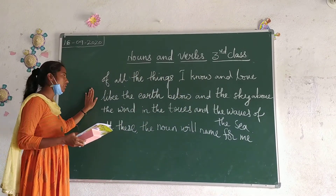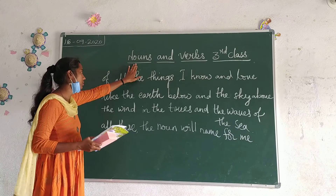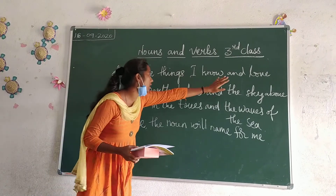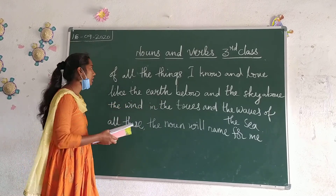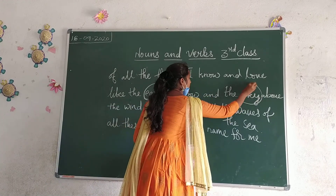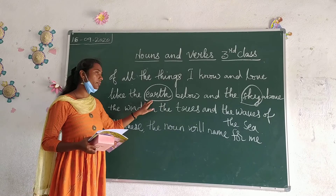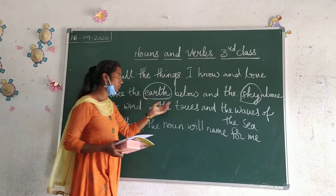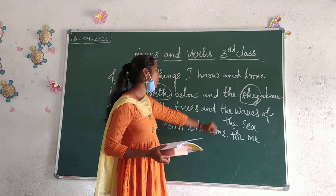We have written the verses. The first stanza — we will identify the nouns, then we will go to the verbs. All these things we know and love — like the earth. Here, earth is a noun. The sky is also a noun. Earth is single, sky is also single, so both can be identified as nouns.